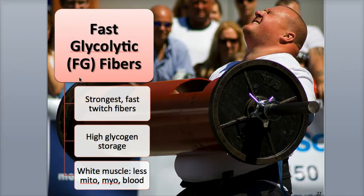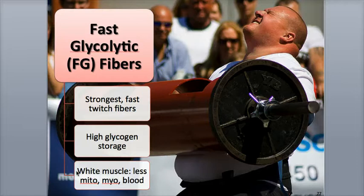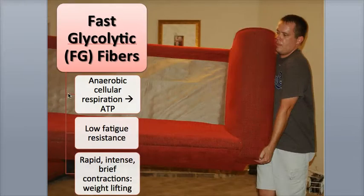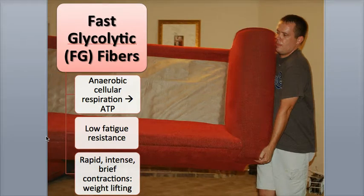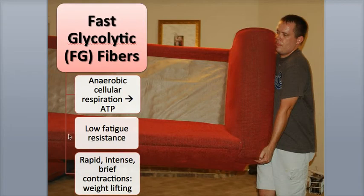Fast glycolytic, or FG, fibers have the lowest concentration of myoglobin, mitochondria, and capillaries. This absence of cellular features gives them a more pale color, which is why these fibers are called the white muscle fibers. They are able to store very large quantities of glycogen and produce ATP mostly through anaerobic glycolysis. They are the second type of fast twitch muscle and can also rapidly hydrolyze ATP, giving them a stronger fast contraction speed. But they have the lowest fatigue resistance of the three fibers.